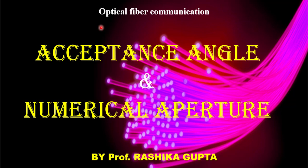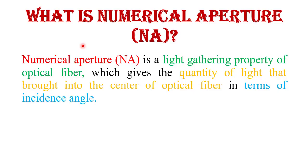Welcome to Quick Learn Tutorial Series. In this video I will explain two important topics of optical fiber communication: acceptance angle and numerical aperture. Numerical aperture is defined as the light gathering power of the fiber — how much light a fiber can gather. It gives the quantity of light brought into the center of the optical fiber in terms of incident angle. Numerical aperture is a dimensionless quantity, denoted by NA.